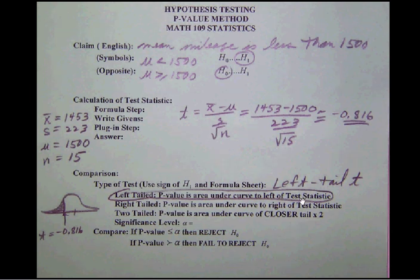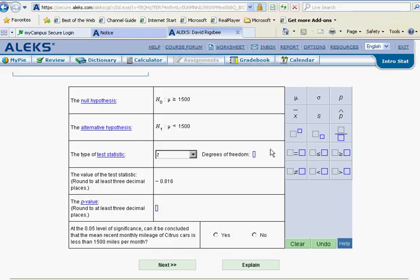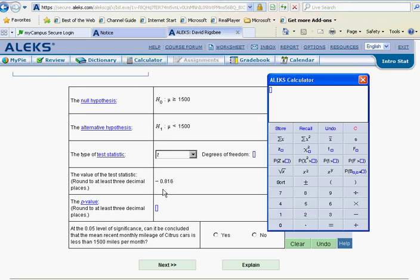And our test statistic here was negative 0.816. So what I'm interested in is this area under the curve to the left of that test statistic. Well, that's going to be the p of t button. So go to ALEKS. Notice here that our ALEKS calculator has the p of t button. But remember that that p of t button, we take the area to the right.